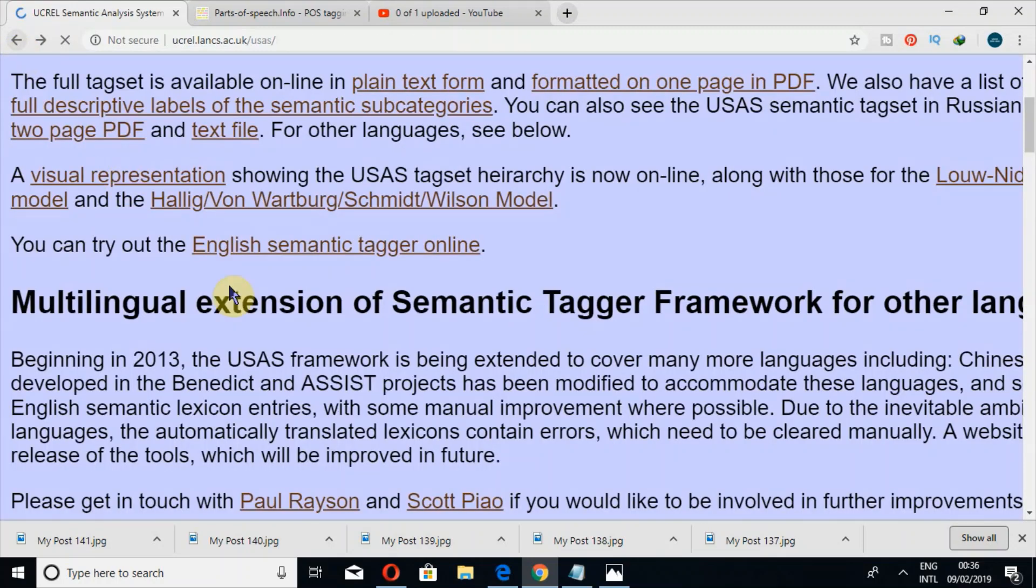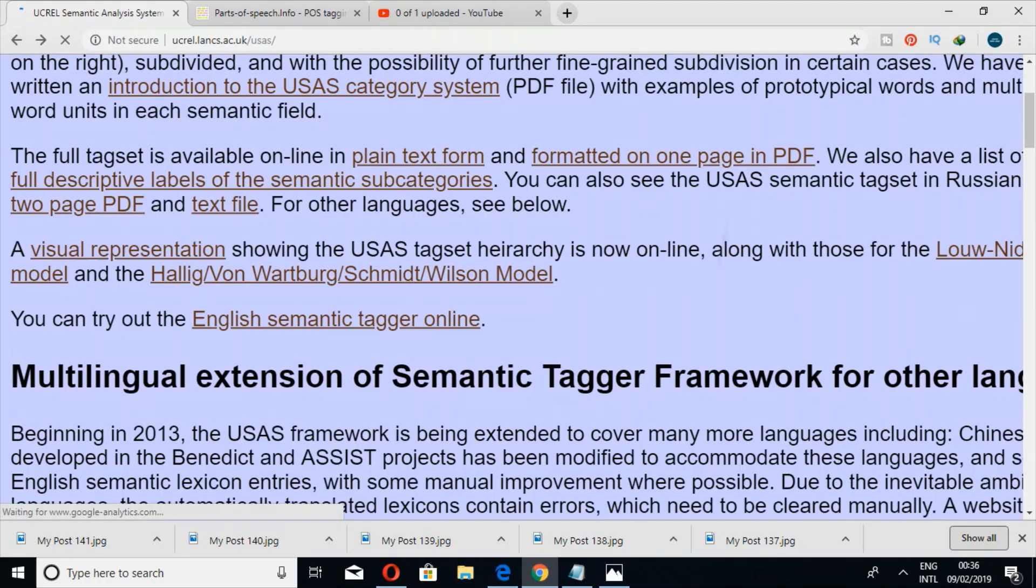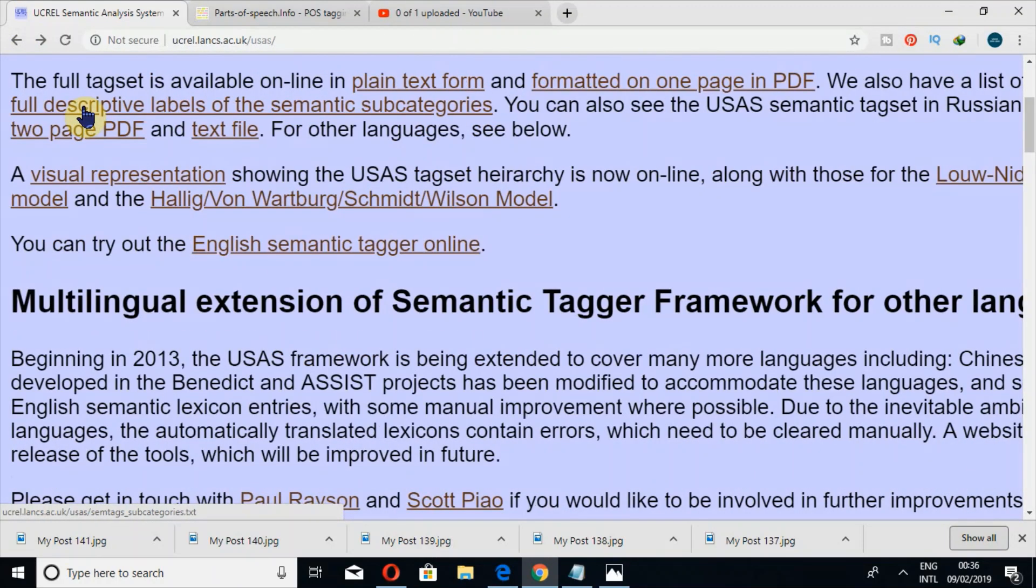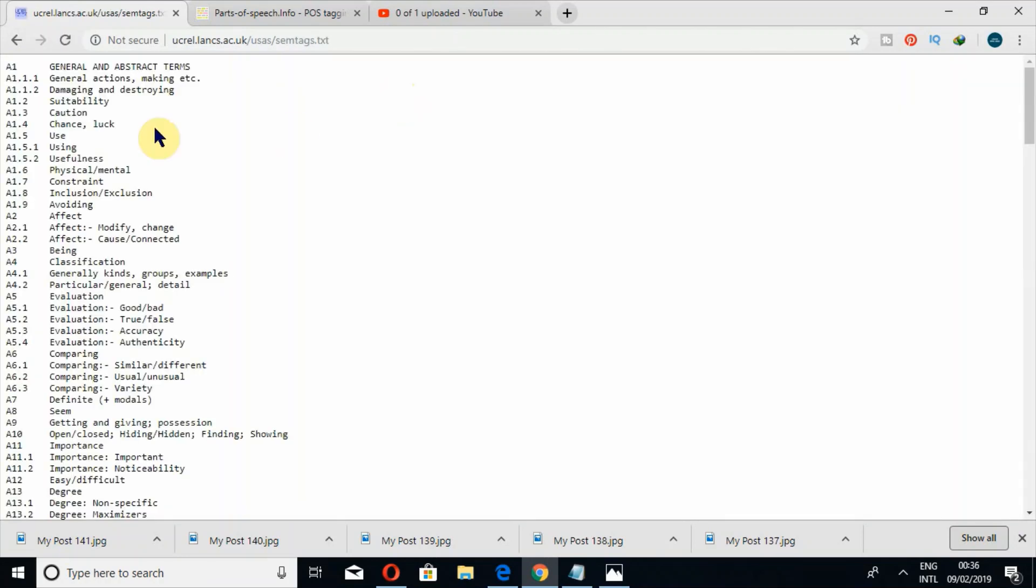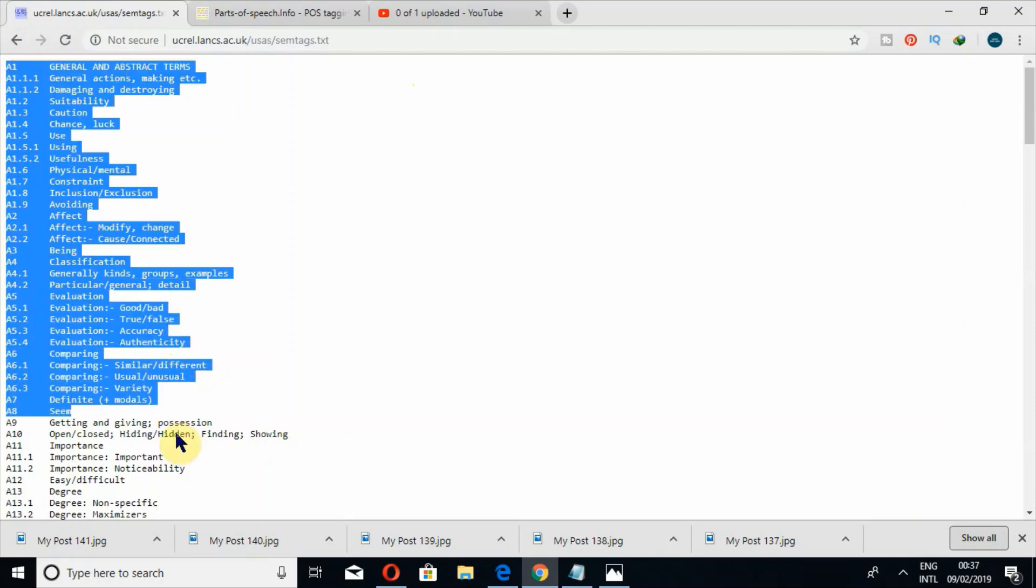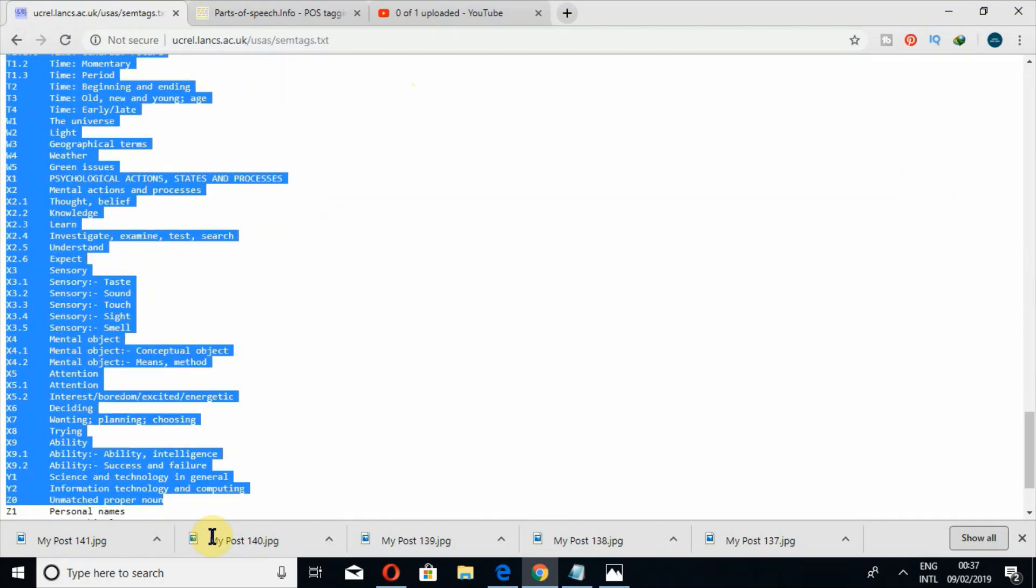Now let's see a few things. If you come to the third paragraph, you can see the full tag set is available online in plain text. When you click on this, you would find all these tags in plain text, and then surely you can copy like this all of these tags.